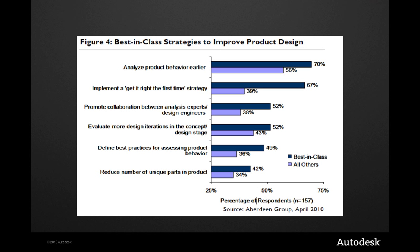The biggest driver to improve the design process is reducing cost. Remember that much of the final cost of a product is determined by the decisions engineering makes during the design phase. 73% of best-in-class manufacturers use digital prototypes in their design process to predict product performance. Analyzing the product's behavior earlier with simulation is how you know you're making the best decisions, way before you need to build physical prototypes.